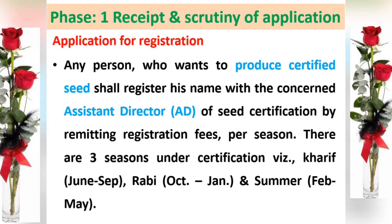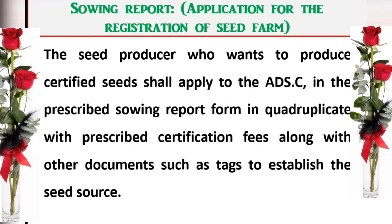In Phase 1 — application for seed certification — the person producing seeds needs to apply to the concerned Assistant Director of Seed Certification and pay a specific fee for each crop in each season. During the application, a sowing report must be submitted mentioning the crop to be grown, the area, and the isolation distance maintained.